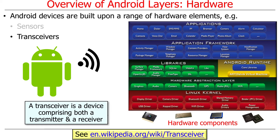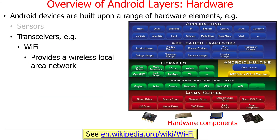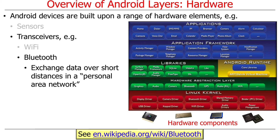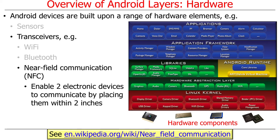Then there are also transceivers, which connect us to the outside world and really make a phone more useful than just a laptop — used for phone calls and things like that. We have Wi-Fi for wireless networking, Bluetooth for a personal area network to communicate with things like a blood glucose monitor over a short range of maybe ten feet. There's also near-field communication, or NFC. Nowadays we use this for things like Google Pay or Google Wallet, where devices communicate in very close physical proximity — just a couple of inches.